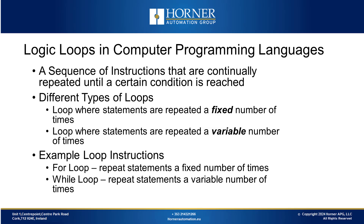We will begin by defining logic loops in computer programming languages. A logic loop is a sequence of instructions that are continually repeated until a certain condition is reached. There are many different defining characteristics of loops. Today we will focus on how many times a loop is repeated. We will look at two different types: for loops, which repeat statements a fixed number of times, and while loops, which repeat statements a variable number of times.